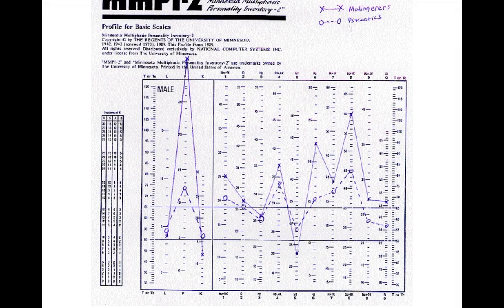I want to spend a couple of minutes on this slide as we close out this presentation on validity. I've plotted a dotted line and a solid line showing just the L, F, and K. If we go left to right — L first, F second, K third — you may want to do this with your own scores on plotting paper to see how it looks. The shape of the L, F, and K from left to right is sometimes indicative of what's going on with the client and allows a quick interpretation of the validity scales.